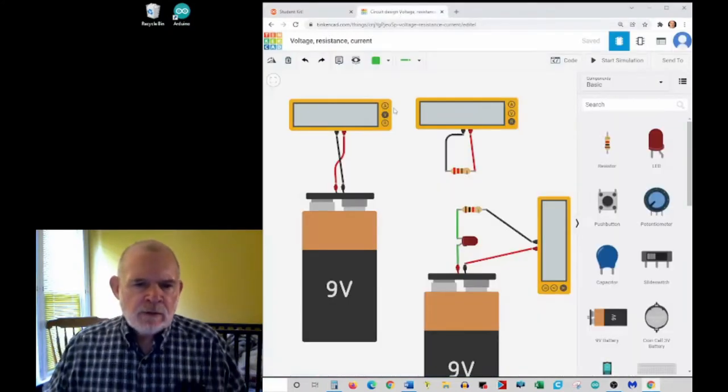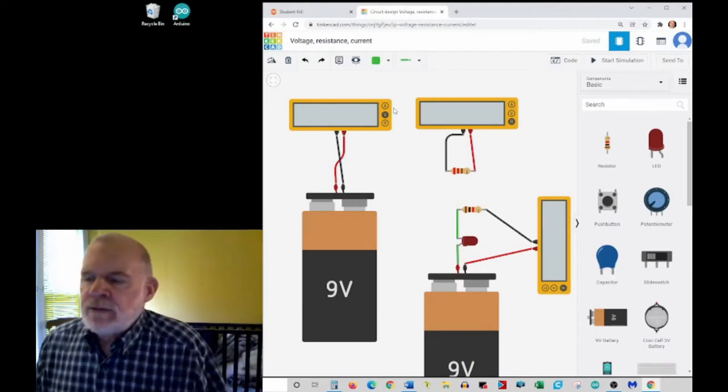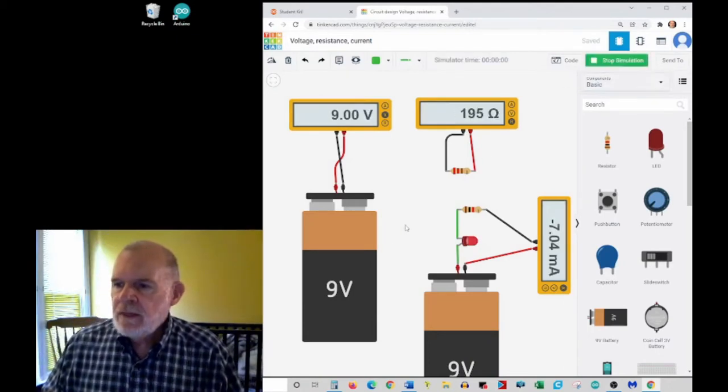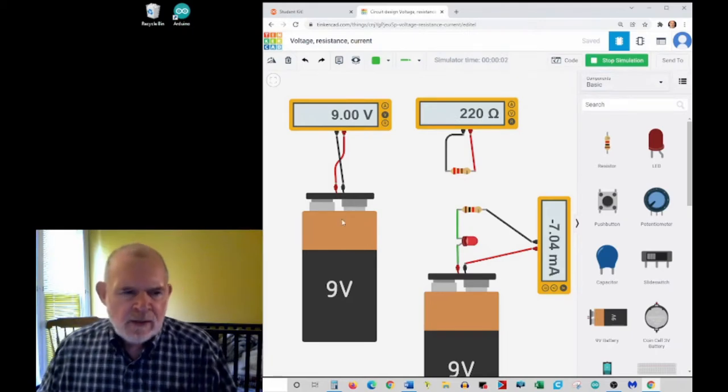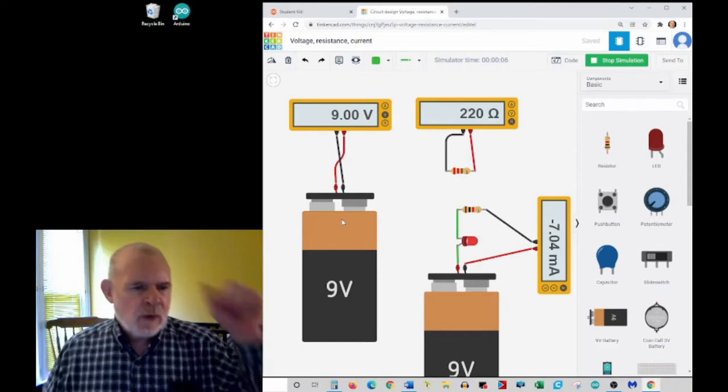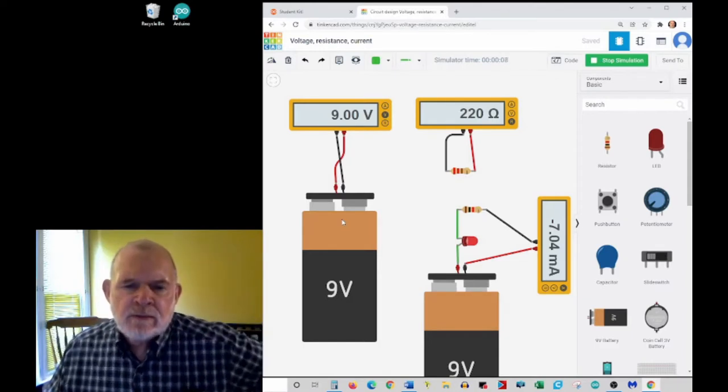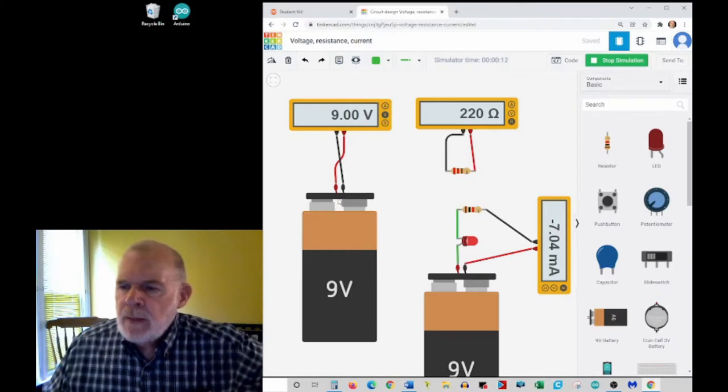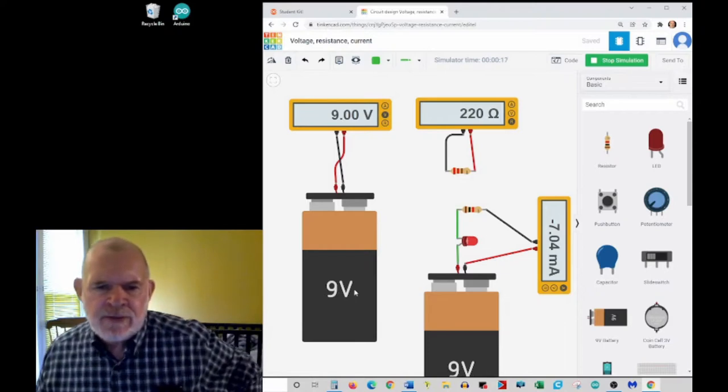All right, let's review the three quantities that we're going to measure. Voltage, like the voltage of a battery, is basically the electrical force causing electrons to move through the circuit. Some people call it the electromotive force. We measure that in units called volts, abbreviated with the letter V.